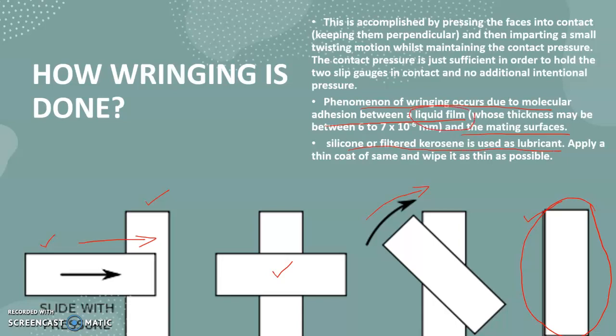For making that liquid film we are either using silicon or filtered kerosene. We are not at all using oils. Oils may give some gaps that actually prevent the adhesion between the surfaces. So we have to remove all the oil from the surface then we have to apply silicon or filtered kerosene between the surfaces.